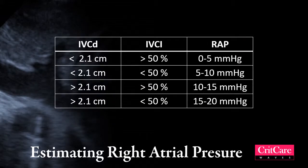There is a way of estimating right atrial pressure using the IVC view. If you have a small IVC that collapses more than 50%, the right atrial pressure is estimated at 0 to 5. A small IVC collapsing less than 50% gives 5 to 10. A large IVC collapsing more than 50% gives 10 to 15, and a large IVC that does not collapse more than 50% gives 15 to 20.